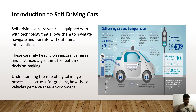Introduction to Self-Driving Cars. Self-driving cars are vehicles equipped with technology that allows them to navigate and operate without human interventions. These cars rely heavily on sensors, cameras and advanced algorithms for real-time decision-making. Understanding the role of digital image processing is crucial for grasping how these vehicles perceive their environment.